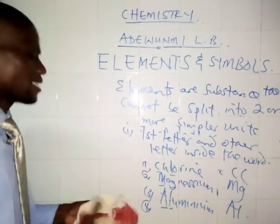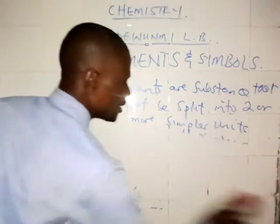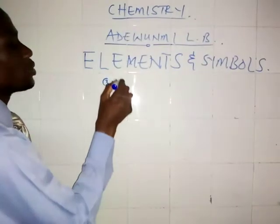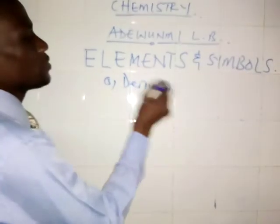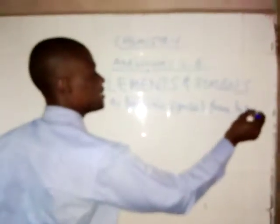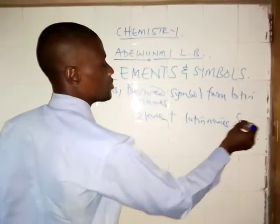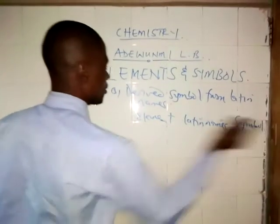The third category: we can derive the symbol from the Latin name of the element. Here we look at the element name, its Latin name, and its symbol.